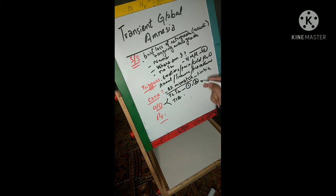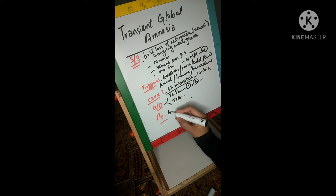With temporal lobe seizures, initially there's a focal seizure, then secondary generalization. Almost in all conditions, there is impairment of consciousness. Seizures can be brief also, and with EEG you can differentiate.